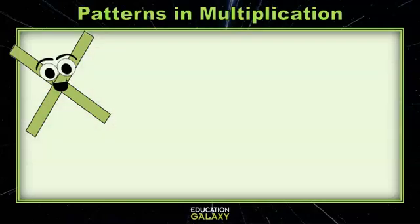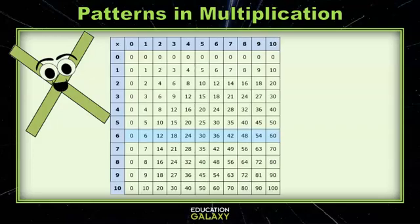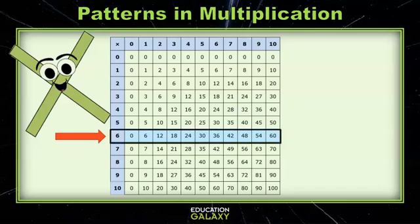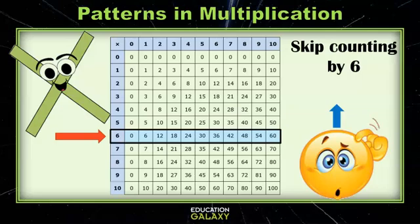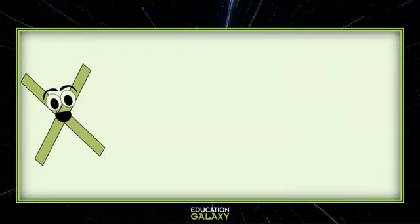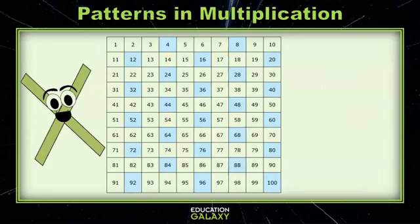So let's look for some patterns in multiplication. We are going to look at a multiplication chart. Let's look at the row beside the 6. What do you notice about those numbers? If you said that they are skip counting by 6, you are correct. They are also known as multiples of 6. Let's find another pattern.